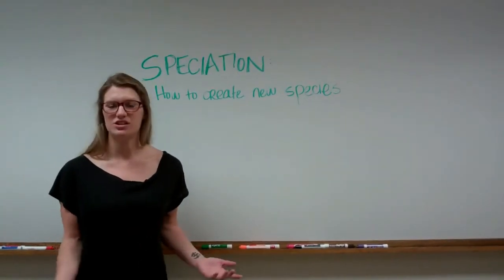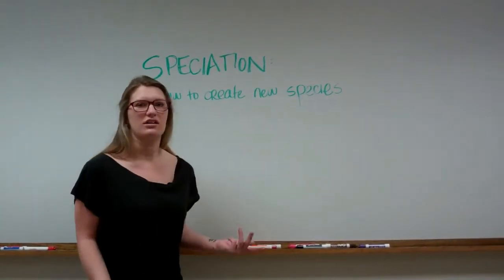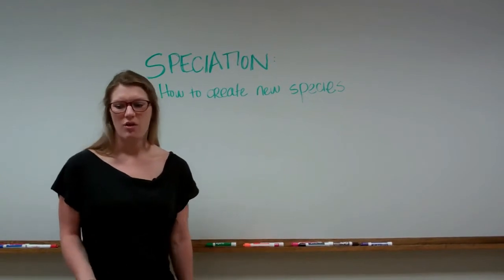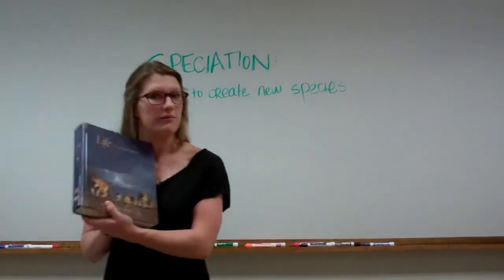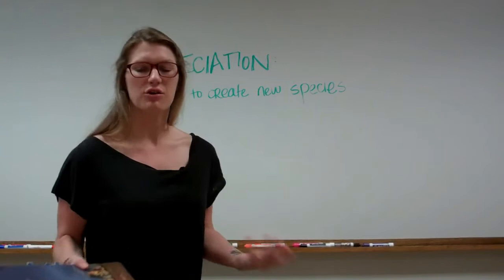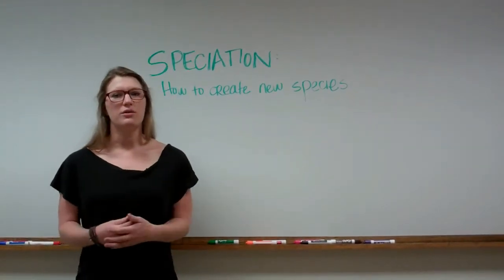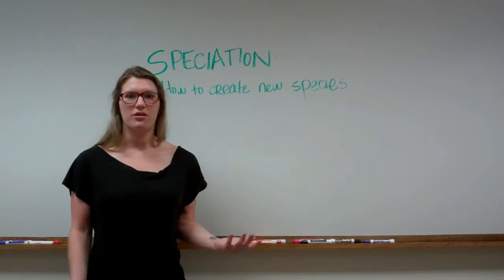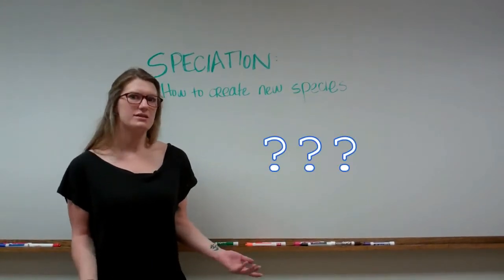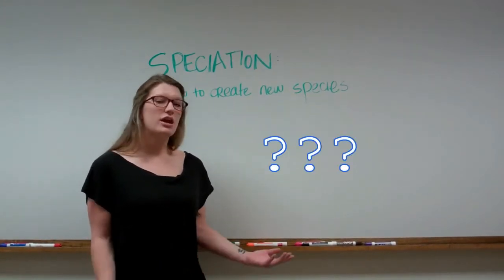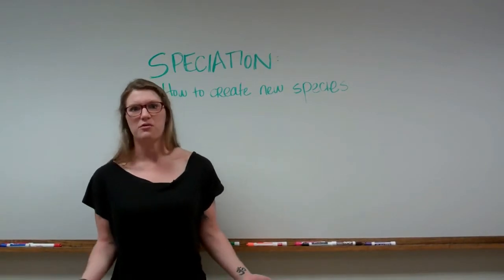In order to understand speciation, we first need to understand, what is a species? Well, a textbook like this one will tell you that a species is a group of interbreeding animals that are reproductively isolated from other groups. But what does that mean in simple terms? Well, let's look at horses, an animal that most people are familiar with, and see how they fit the species rule.